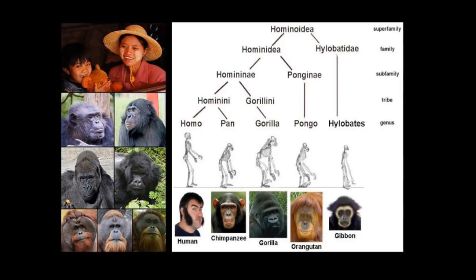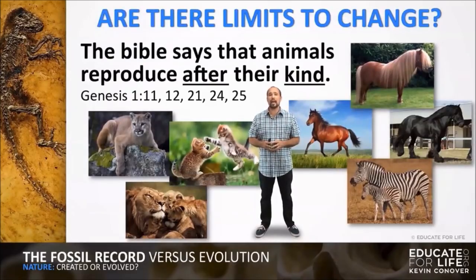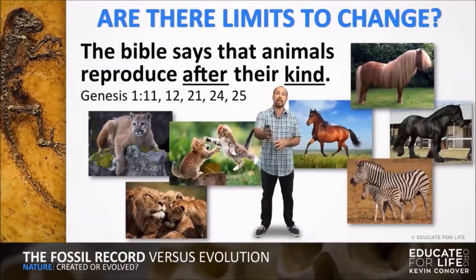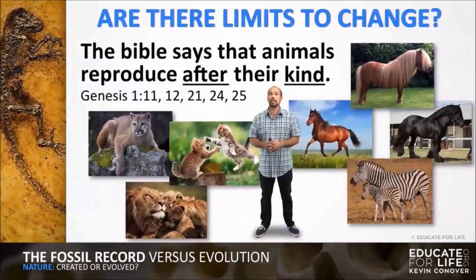Does that mean that humans are the same kind as apes since we're in the same family? The truth is that 'kind' means anything a creationist wants it to be depending on what they're talking about — it can be anything from genus down to species in humans. What the Bible teaches is that animals reproduce after their kind; they don't change from one kind into another kind. There's variation within kinds — we have all different types of horse kinds, all different types of cat kinds, but they don't change from one family or kind into another.